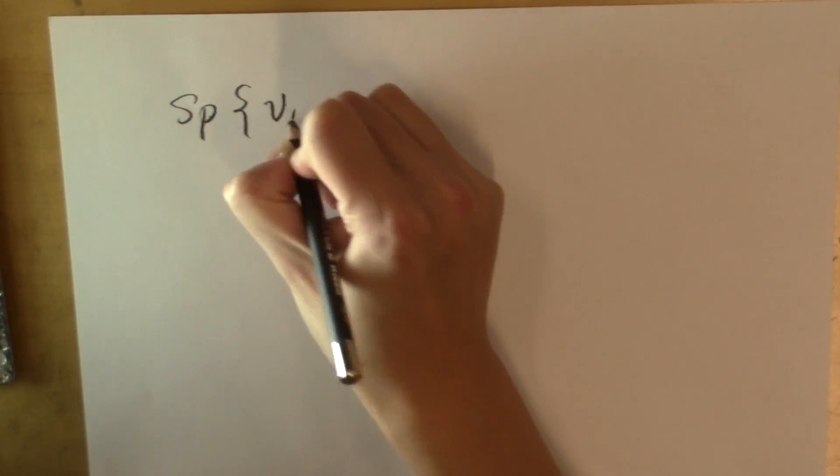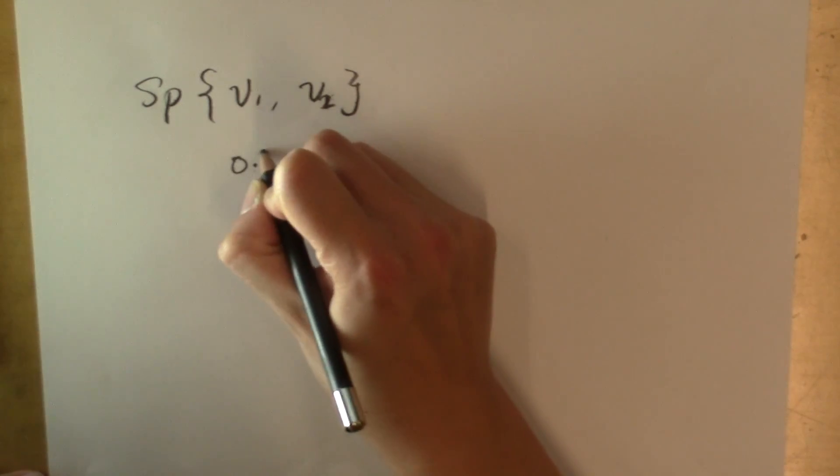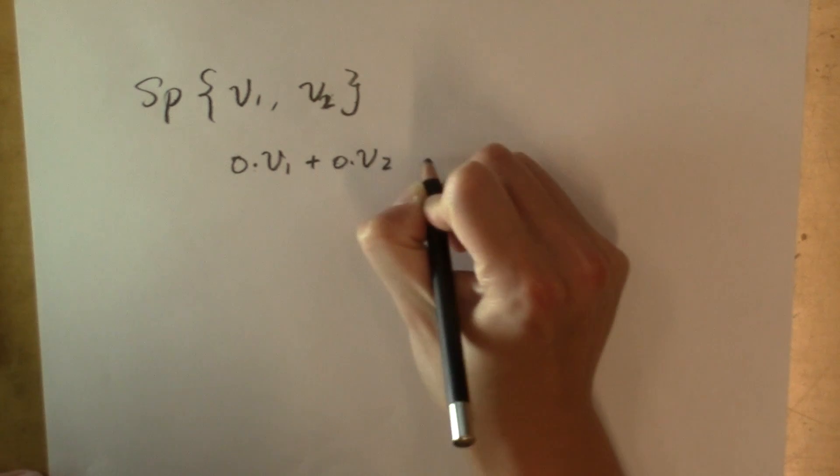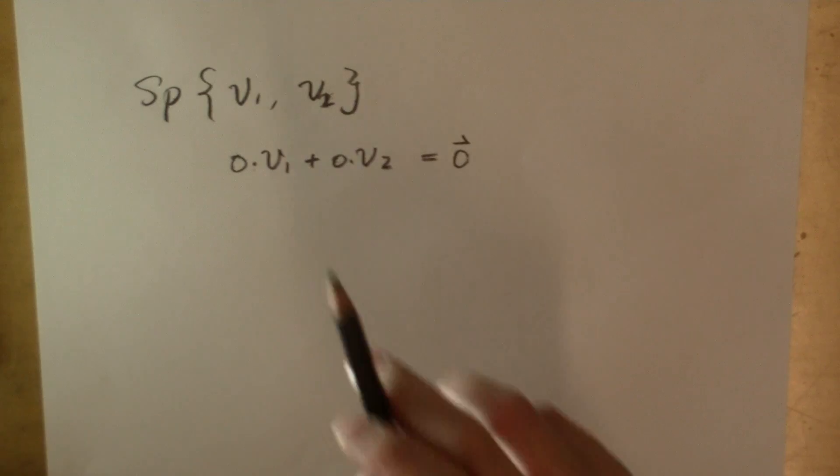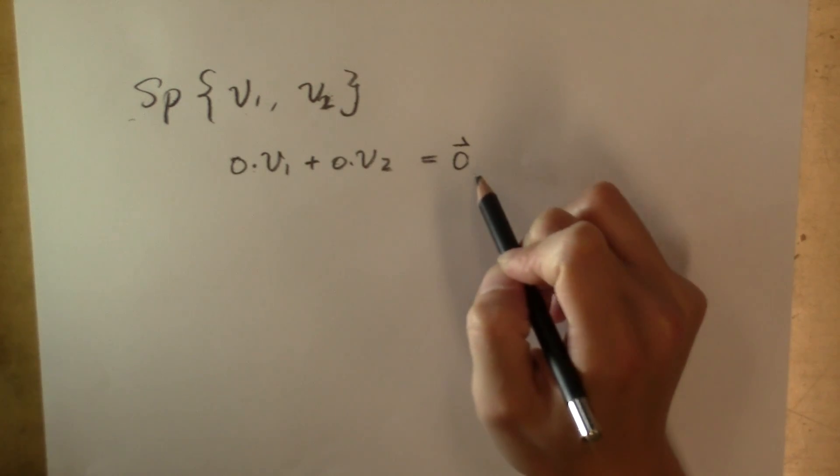What about the span of two vectors, v sub 1, v sub 2? First of all, we know the zero vector is always a linear combination of v sub 1 and v sub 2 because we can just choose the coefficients to be all zero. So, the span of v sub 1 and v sub 2 definitely contains the zero vector.